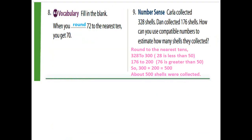Question eight — fill in the blanks: when you round seventy-two to the nearest tens you get seventy. This is rounding to the nearest tens. We get seventy because two is less than five — when the digit on the ones place is less than five, we round down to the smaller side, so seventy-two rounds to seventy, not eighty.